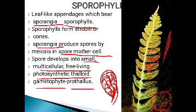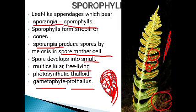The prothallus is inconspicuous — not clearly visible — and is a small, multicellular, free-living, photosynthetic thalloid structure. It is not differentiated into stem, root, or leaf. Even though it is multicellular, it is very small in nature. It is free-living as it develops from the spore on soil or any substratum, and it is photosynthetic, preparing its own food.